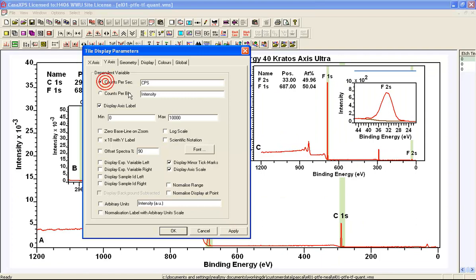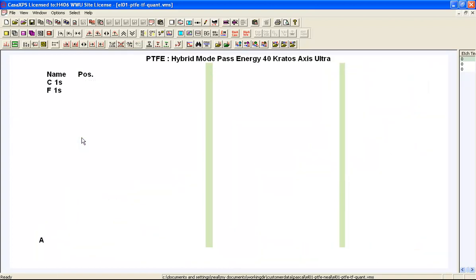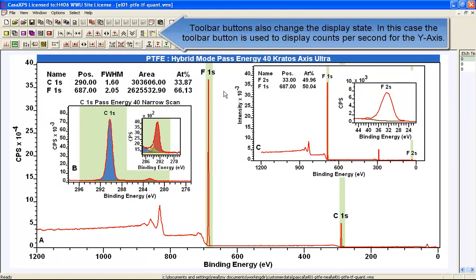I'll switch that to counts per second. And that now brings this tile display in line with the other tile display, with the exception of the counts per second.